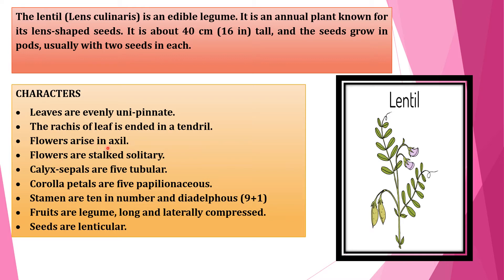Flowers arise in the axil — this is the axil portion, flowers arise here. Flowers are stalked and solitary; you can see only one flower, that's why solitary. Calyx sepals are five in number and tubular in shape.